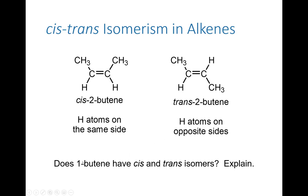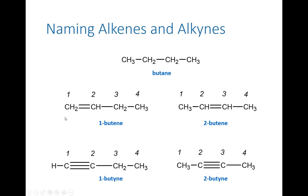Let's look at a specific example: 1-butene. Does 1-butene have cis and trans isomers? Well, the first thing you'd need to do is draw 1-butene. We have CH2 and CH with the double bond. Can this have cis-trans isomerism? The answer is no. We said that in order to have cis-trans isomers, each carbon engaged in the double bond has to have exactly one hydrogen atom bonded to it. This carbon has two, so therefore there is no cis-trans isomer.